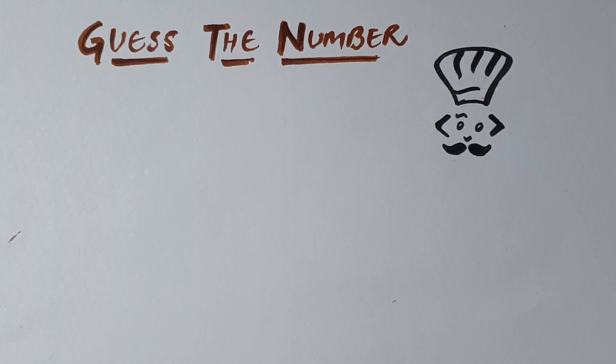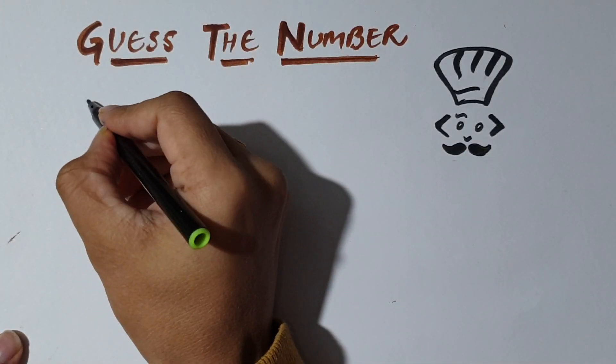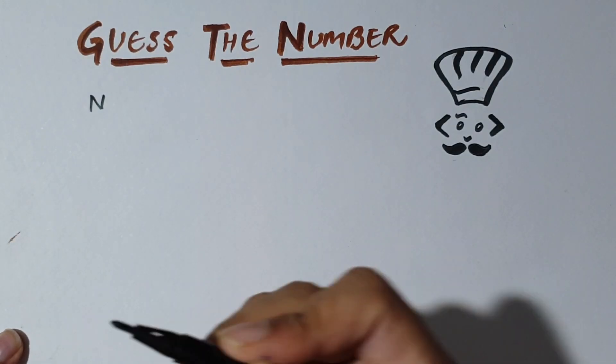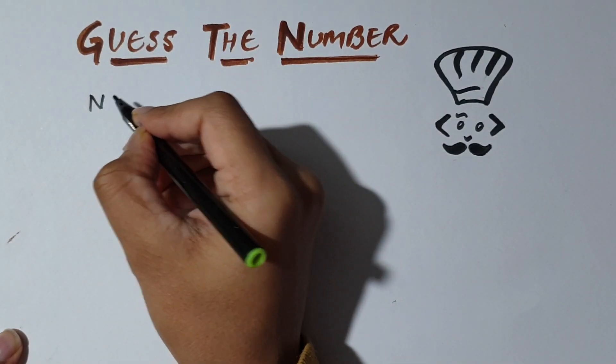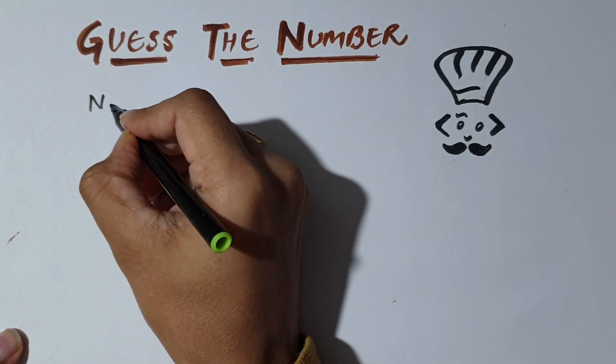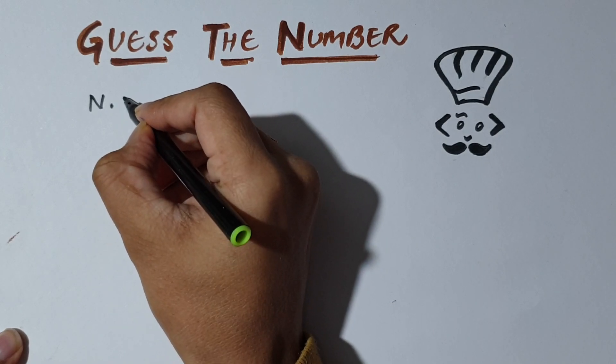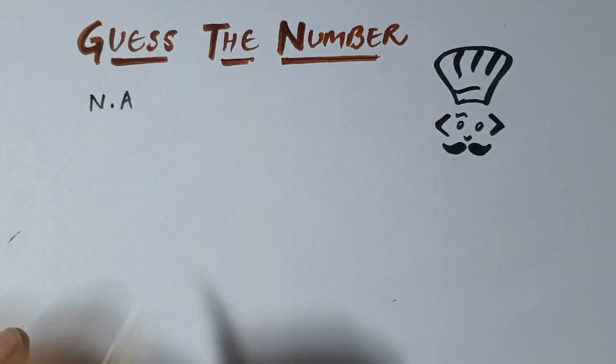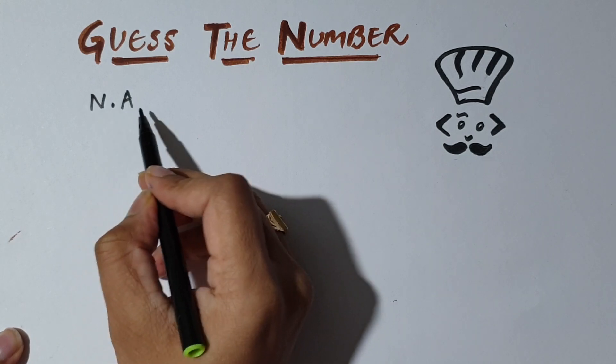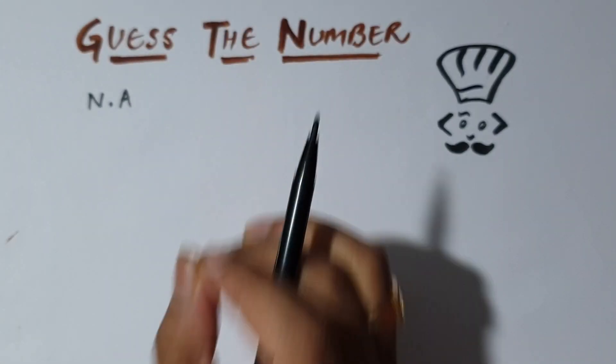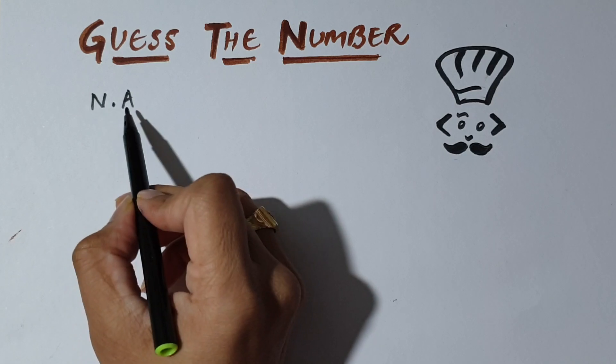Chef asks his brother Chefu to choose a number N. Then he gives a number A and asks his brother to multiply this to the chosen number N. So we have N into A is what Chefu has in his mind.